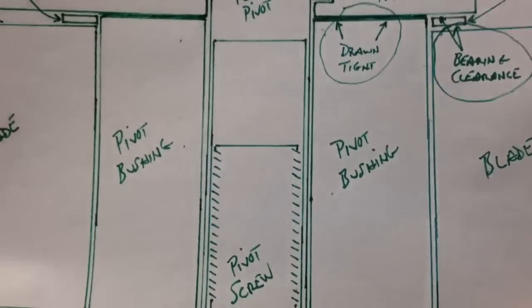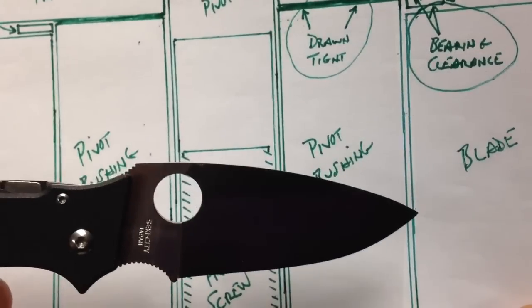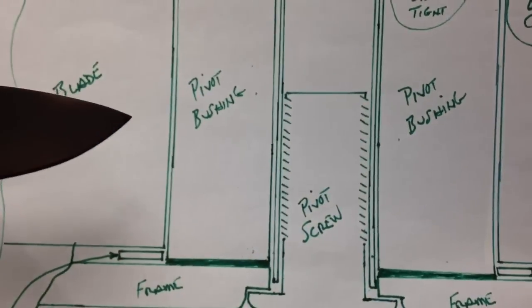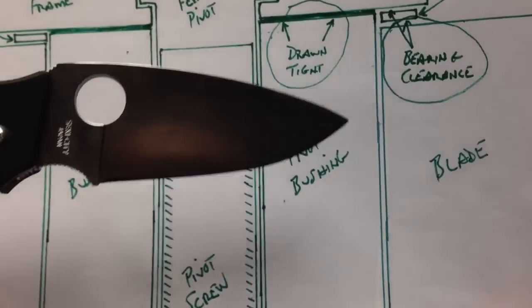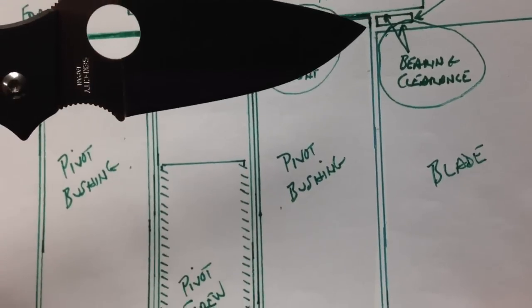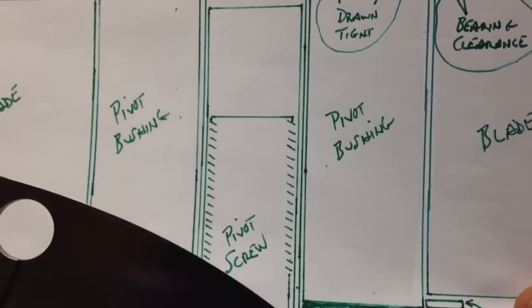Another interesting aspect of this design, if you notice the hole in the blade goes from here all the way to here so it's a pretty broad span. What that does is it takes advantage of these slip fits between blade and bushing and bushing and pivot.